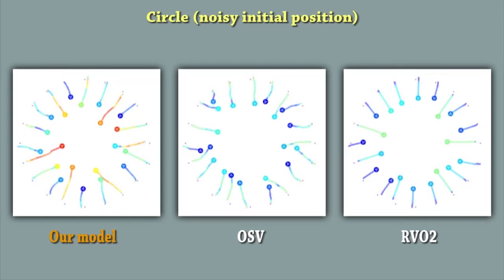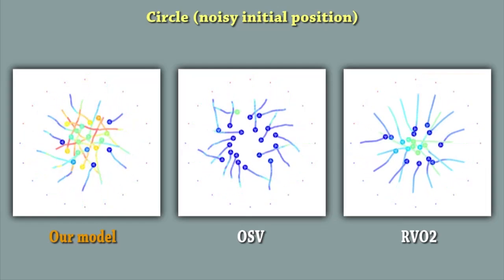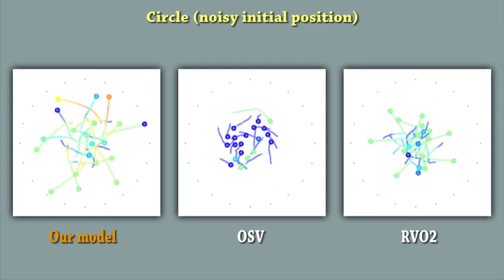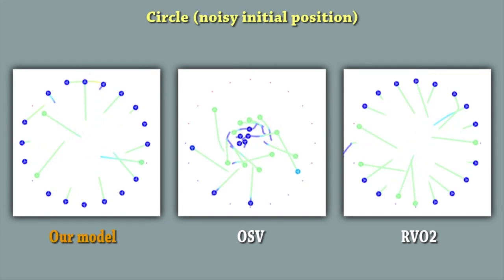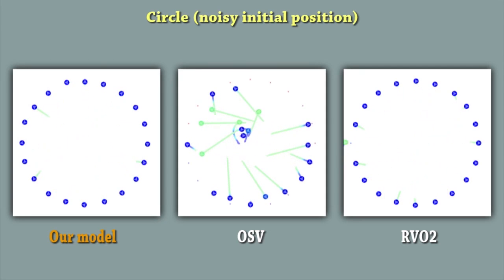For the same scenario, but with a noisy initial position to disrupt symmetry, RVO2 is able to handle this scenario. However, we notice that agents get too close to each other at the center, which might seem unnatural behavior.